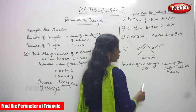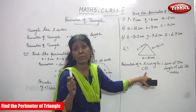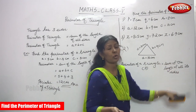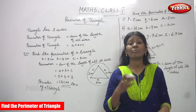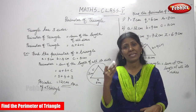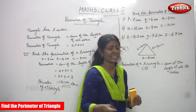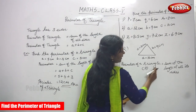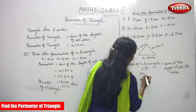We have to find the perimeter of the triangle, represented as P. P represents the perimeter of the triangle, which is equal to the sum of the length of all its sides. That means we have to add all three sides. So, perimeter of triangle P is equal to A plus B plus C.